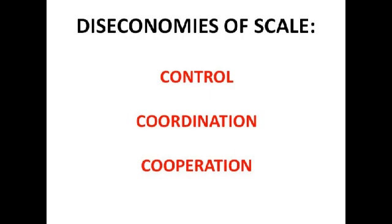Diseconomies of scale have three main types — the three C's: control, coordination, and cooperation. Control in a business is harder when you've got a bigger business — it's hard to monitor productivity and quality and quite expensive to do so. In a small team you can tell exactly what each worker is doing, but in a massive factory with lots of factories all over the country, one small worker could just be slacking off and you'd have no idea.